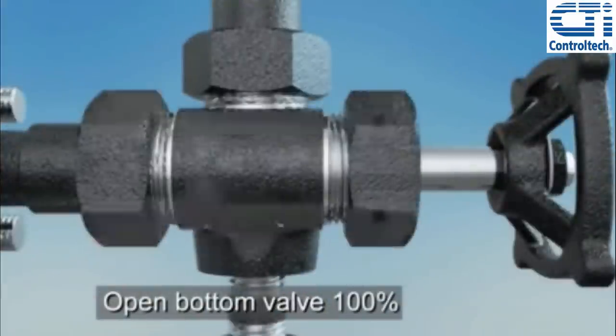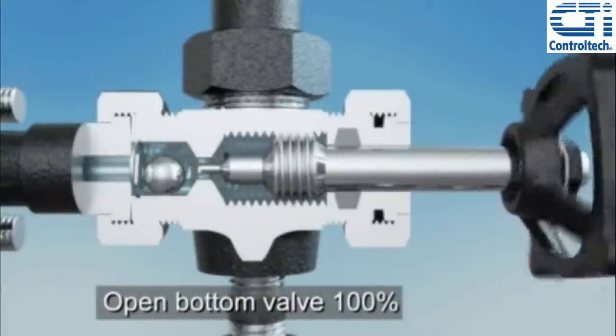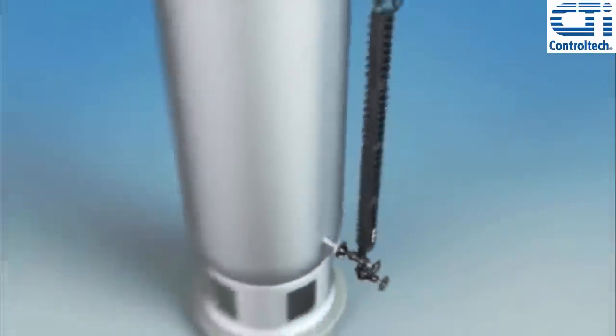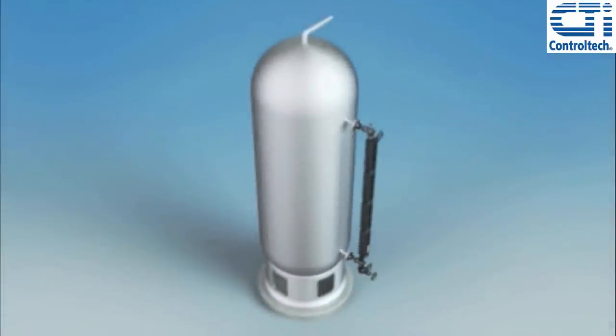Next, fully open the bottom valve. The tip of each stem has now been retracted into its seat cavity, allowing the ball checks to engage in the event of a catastrophic failure.